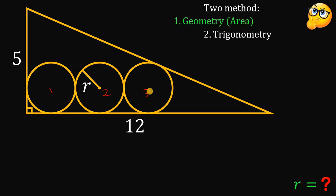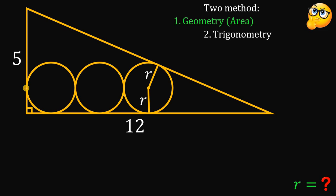Let's first use the geometry approach. We know these three circles are congruent, so we can place a radius here. This circle is tangent to the side of this right triangle. We create another radius and a segment directly to this side of the right triangle. The length of this segment must equal r + r + r + r + r, or simply 5r. Also, each radius is perpendicular to the respective side it touches.